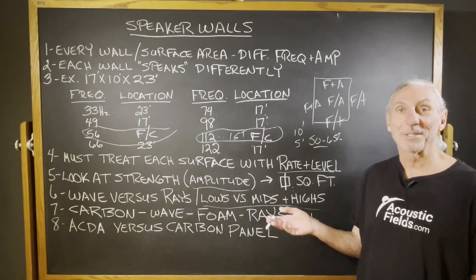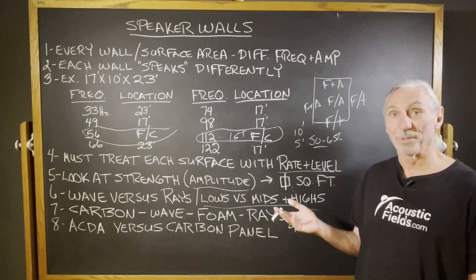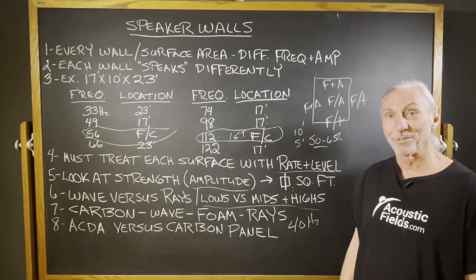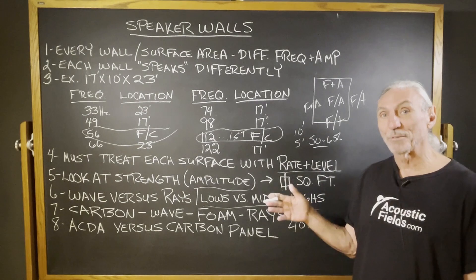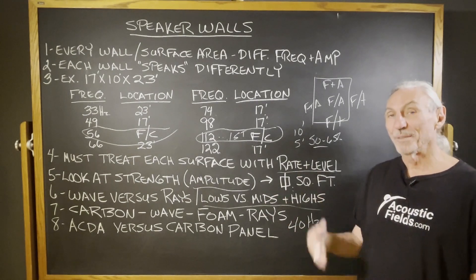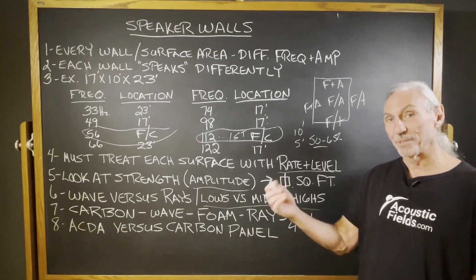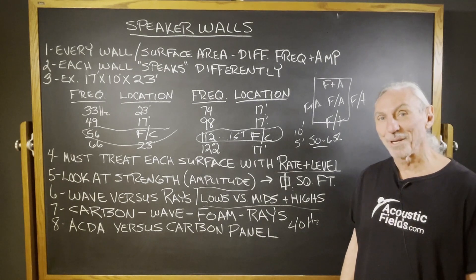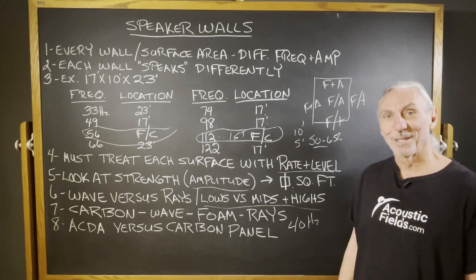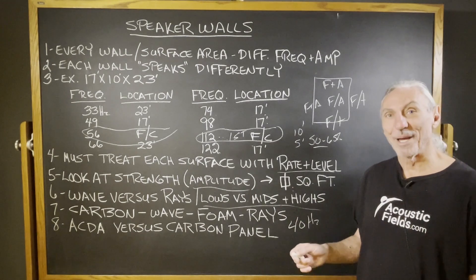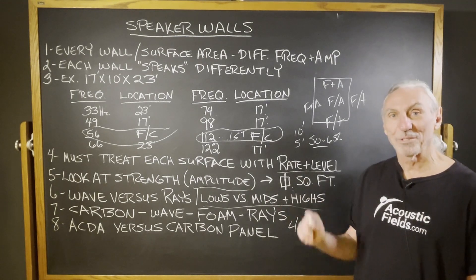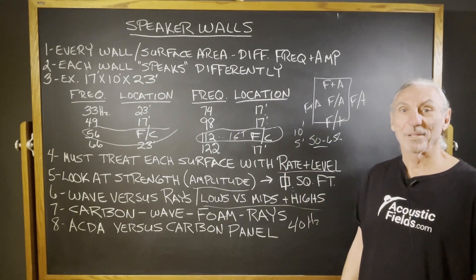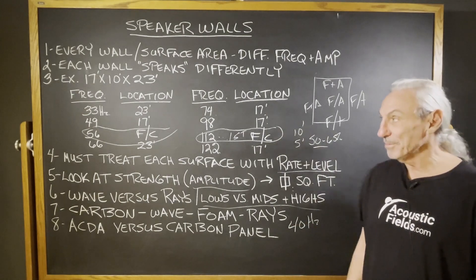In an untreated room, you can't tell which surface area is 'mouthing off' the most, because they're all equally responsible for the noise. But when you start eliminating each surface area with treatment and solving those issues, the other surface areas really start to shine and become pronounced. So there's always a rush in our inbox for phase two — the subject line of emails always says 'phase two help, phase two help,' because they did phase one and now the other surface areas are really becoming pronounced.